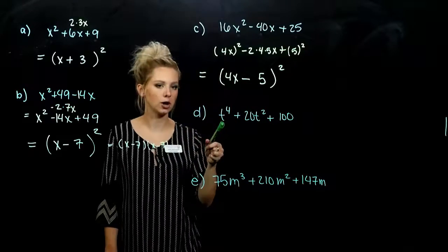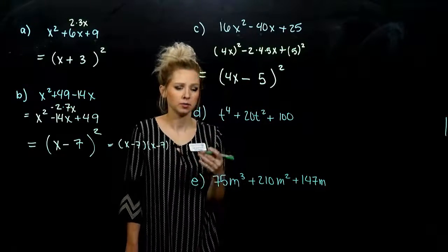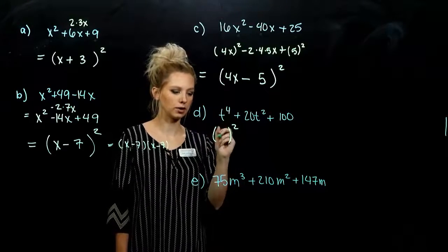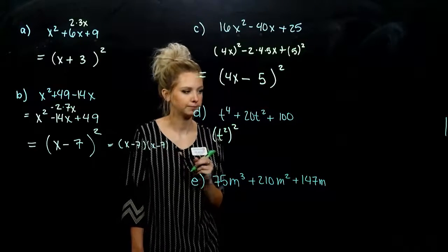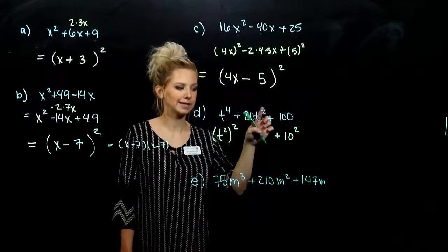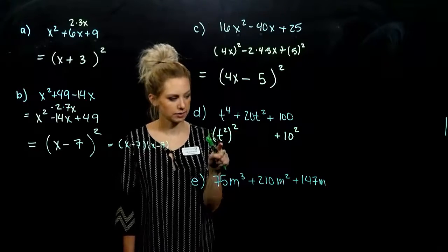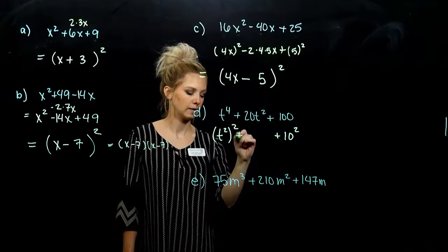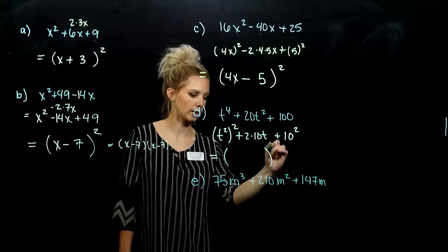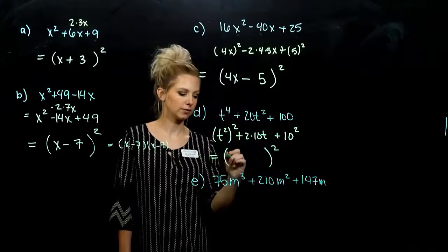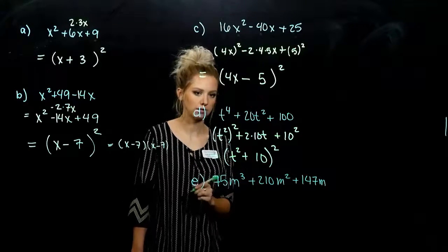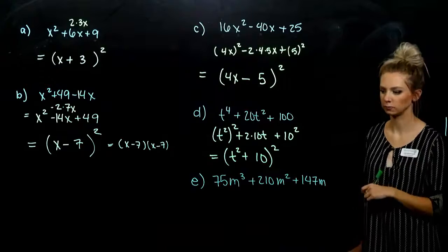The next one has some larger powers. If I want some quantity squared to end up to be t to the fourth, I need t squared on the inside. And 100 is a square of 10. So, can I break up 20t squared into 2 times t squared times 10? Yes — 2 times 10t squared gets us there. So yes, it is a perfect square trinomial, and it factors as t squared plus 10, quantity squared. Again, if you're not sure, foil it out and make sure it's correct.